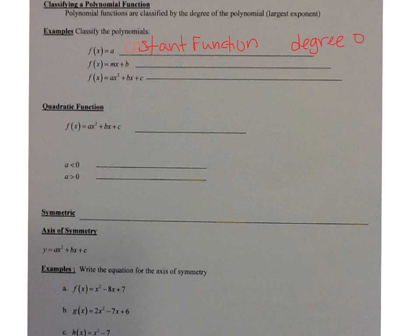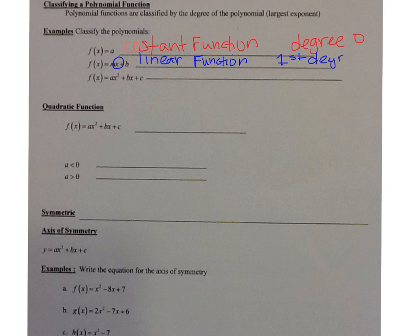The next one: f(x) = mx + b. That's a linear function. Its largest exponent is 1 for the x, so this is a first degree polynomial. And the next one: f(x) = ax² + bx + c. This is a quadratic function. Notice that its largest exponent is 2, so it's a second degree polynomial.